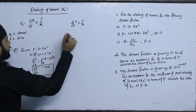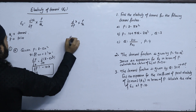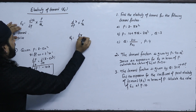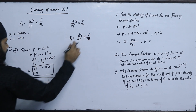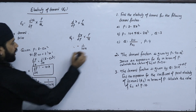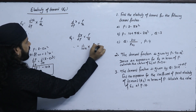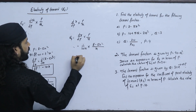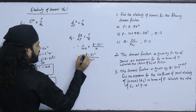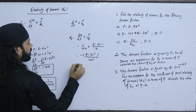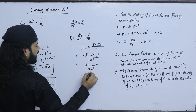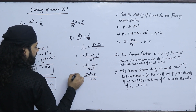Now applying the elasticity formula, the elasticity of demand equals dq/dp into p by q. Substituting, this gives 5x squared minus 8 by 10x squared. This is the elasticity of demand for the first function.